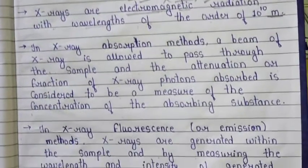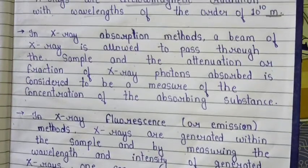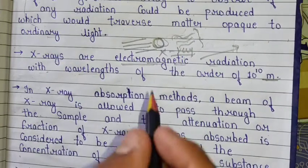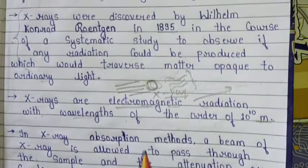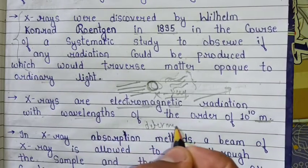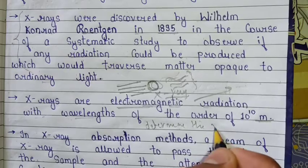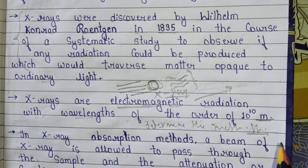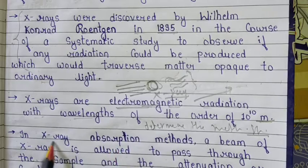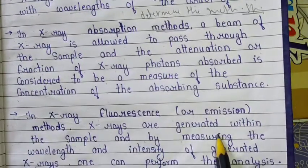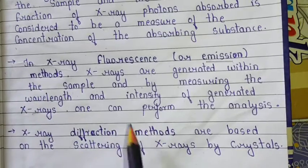Now we are going to discuss three very important methods to determine molecular structure. By using these three kinds of methods, we can determine the molecular structure of any kind of sample. These three methods are: the X-ray absorption method, the X-ray fluorescence or emission method, and the third is the X-ray diffraction method.